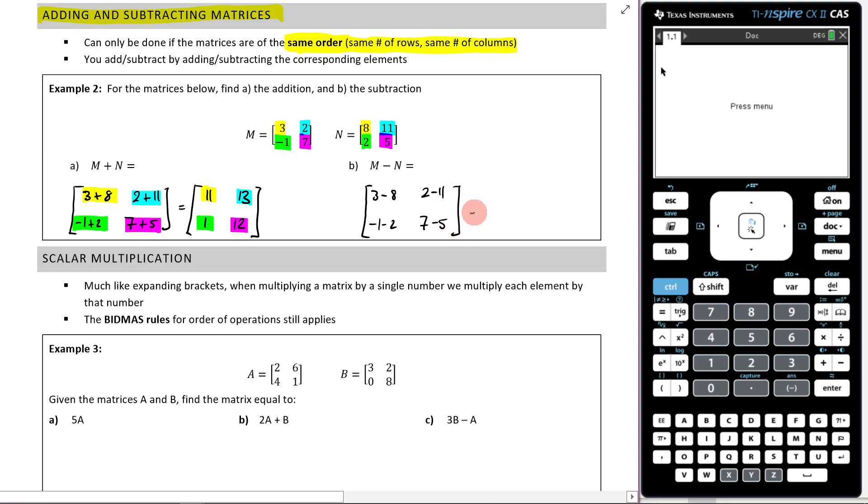So that's going to end up being, once we do this, what's three minus eight, that's negative five. What's two minus 11, that's negative nine. What's negative one minus two, that's negative three. What's seven minus five, that's two. Just like that.